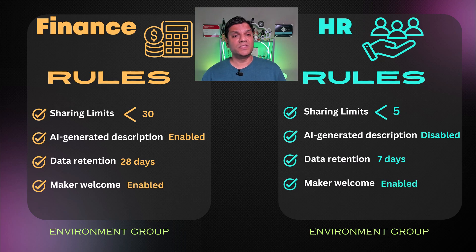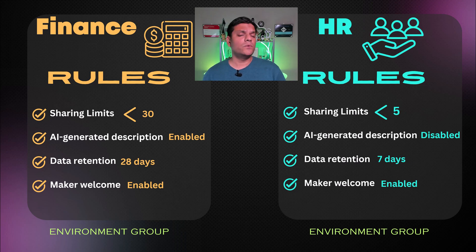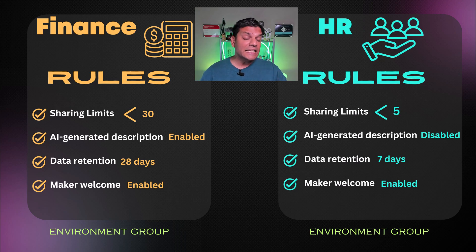Finance wanted to keep sharing with 30 people or less. However, HR was a little stricter — they want to only share it with 5 people. When it comes to data retention, Finance would like to keep it up to 28 days, however HR wants to only keep it at 7 days. Thanks to Environment Groups, you can handle it at this granular level but in different groups altogether. That is the beauty of Environment Groups.